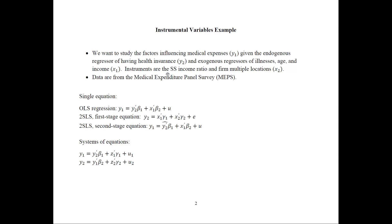The instruments would be the Social Security Income Ratio as X2_1, and then we would also have whether or not the firm has multiple locations. These together form X2, the instruments.